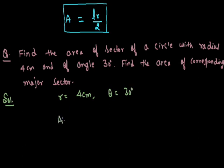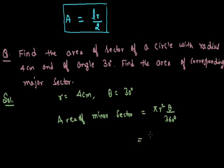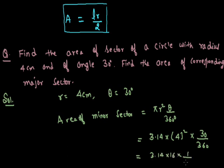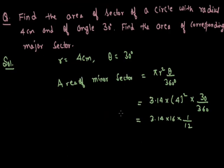Area of minor sector = πr²θ/360. Taking π = 3.14, r = 4, so 4 squared, and theta = 30 upon 360. This becomes 3.14 multiplied by 16 multiplied by 1/12. By solving this, we get 4.187 cm².